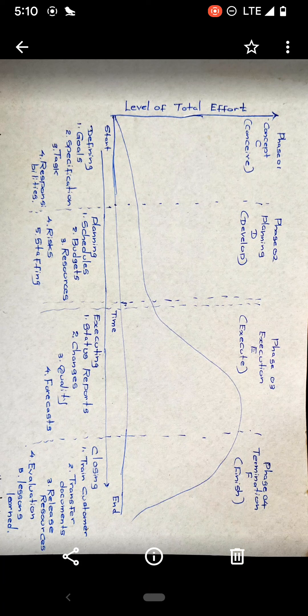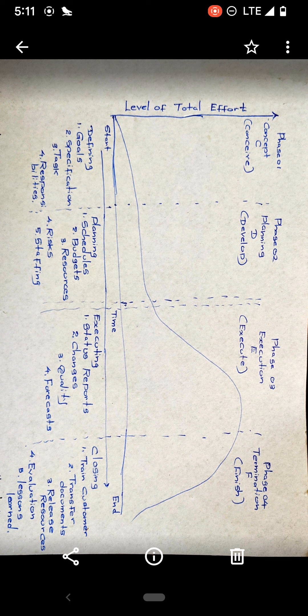Hi guys, today we are going to discuss the phases of project management. There are four phases: defining or initiation, planning, executing, and closing.